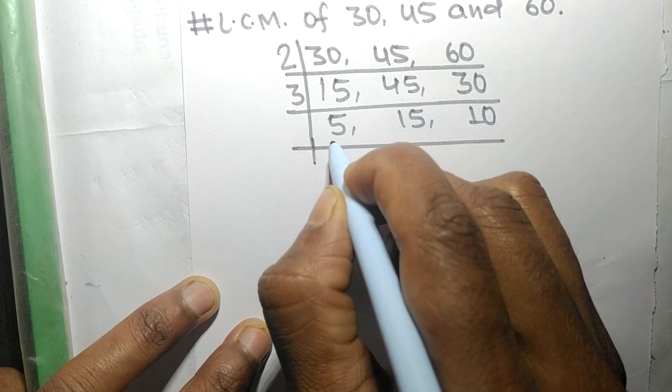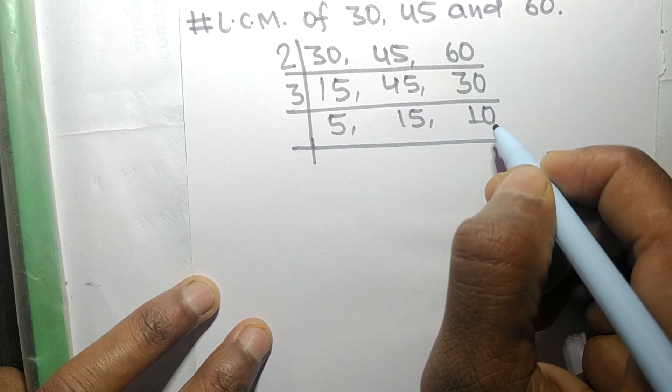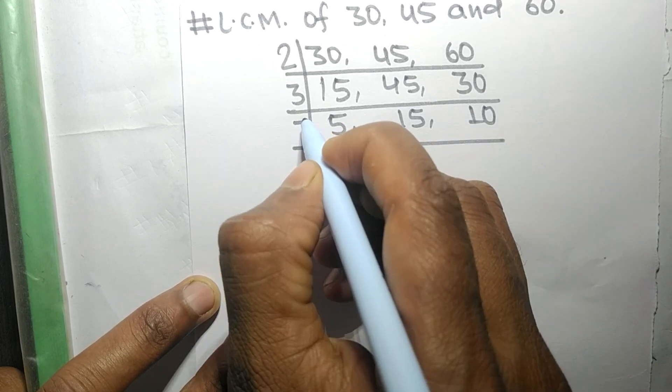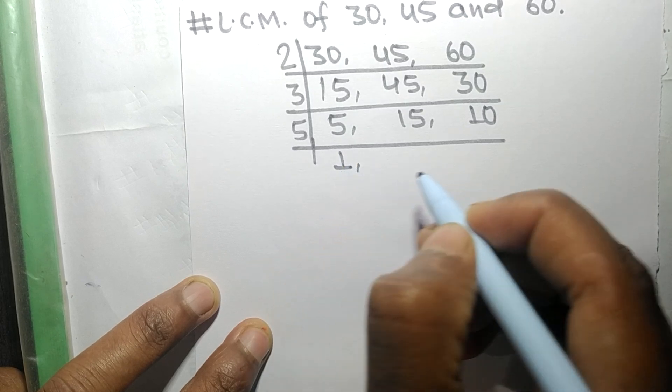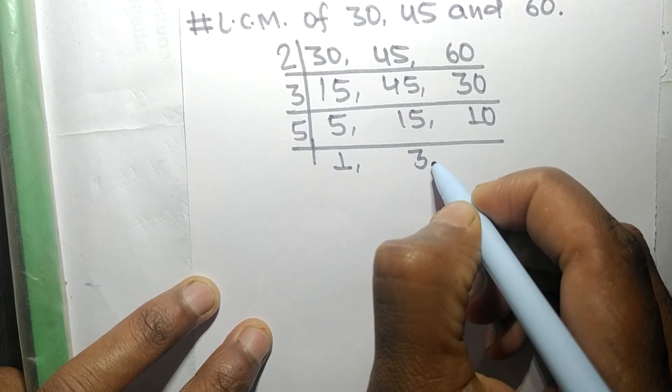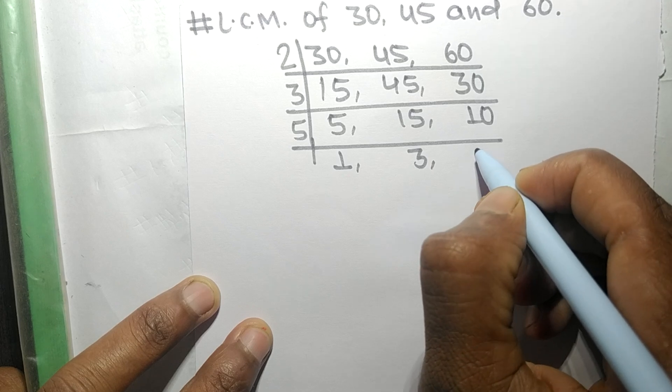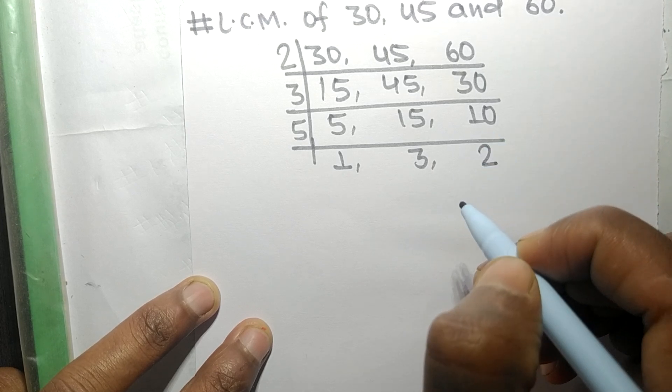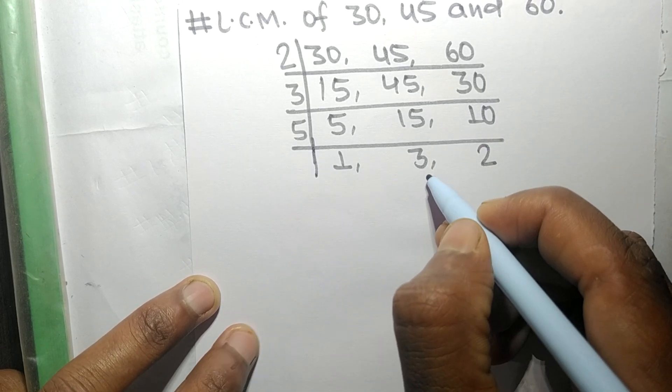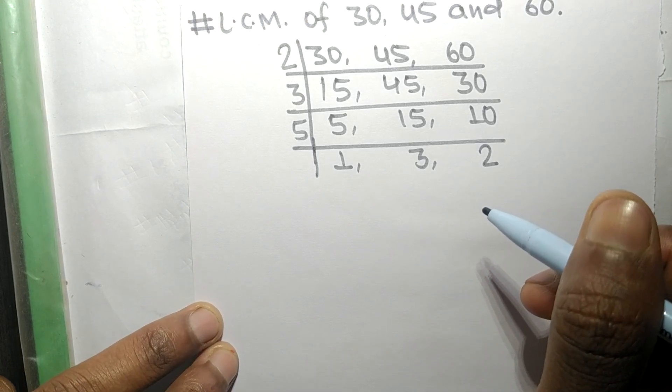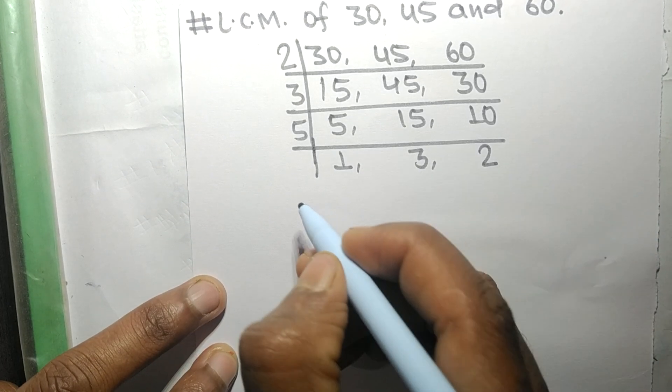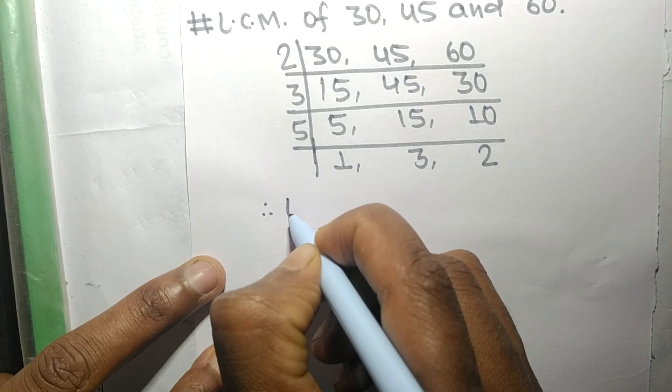So again these all numbers are exactly divisible by 5. So 5 times 1 equals 5, 5 times 3 equals 15, 5 times 2 equals 10. So 1, 3, and 2 are not exactly divisible by the same number.